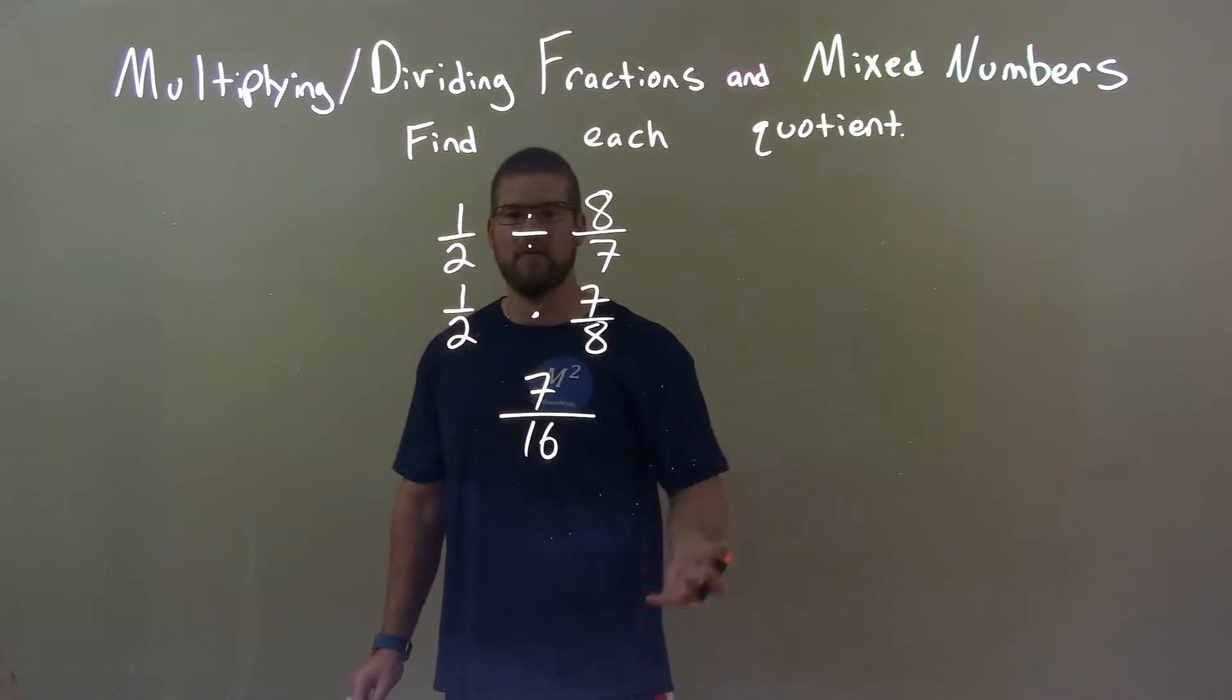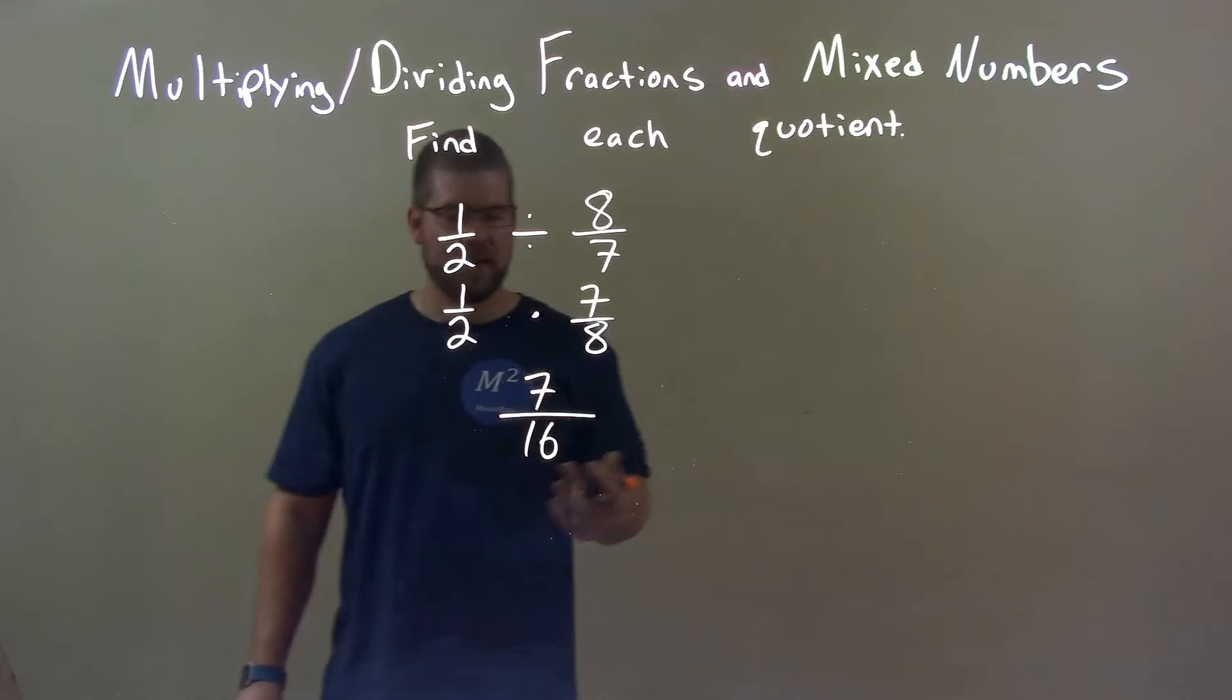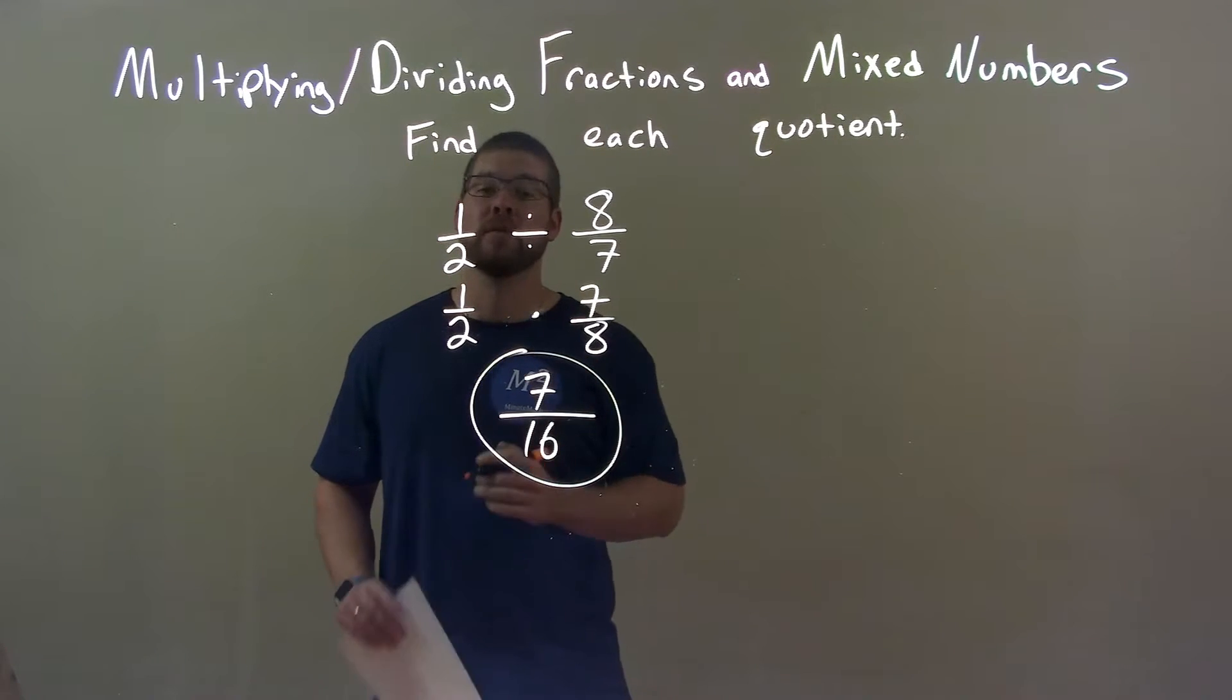Seven and sixteen have no common factor. We can't simplify this in any way. So our final answer is just seven over sixteen.